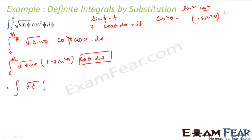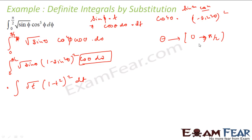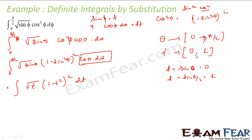The integrand becomes √t · (1 − t²)² dt. Now I have to change the limits — the original limits are for θ, which varies from 0 to π/2. Since t = sin θ: when θ = 0, t = sin 0 = 0; when θ = π/2, t = sin(π/2) = 1. So t varies from 0 to 1, not 0 to π/2.